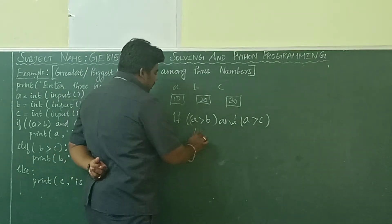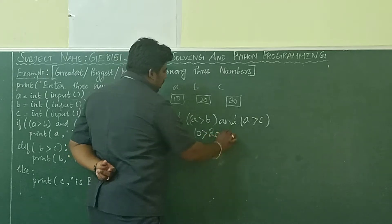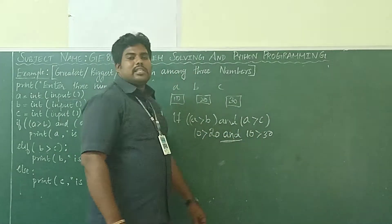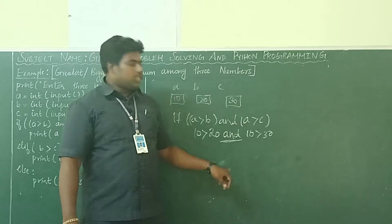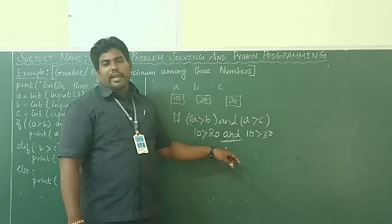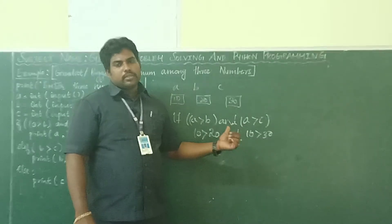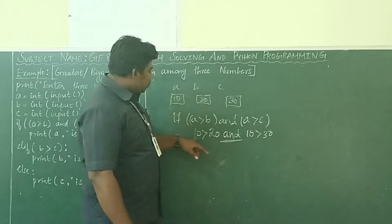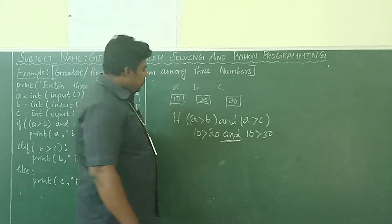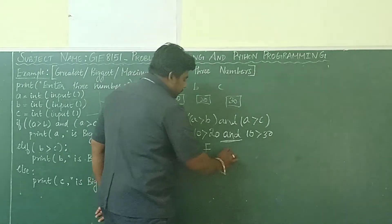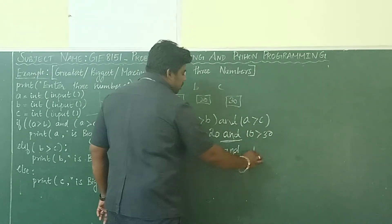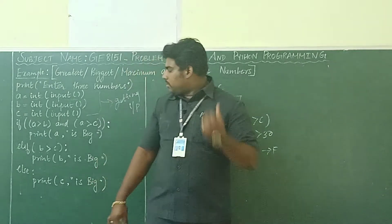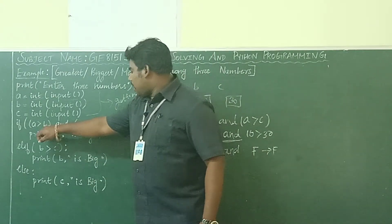What is the A value? 10. So 10 greater than B — what is B? 20 — and 10 greater than 30. What is this 'and'? It is a logical operator. The logical operator 'and' will check both conditions — true or false. So 10 greater than 20 is false, and 10 greater than 30 is also false. As per the AND truth table, false AND false means this whole condition is false.